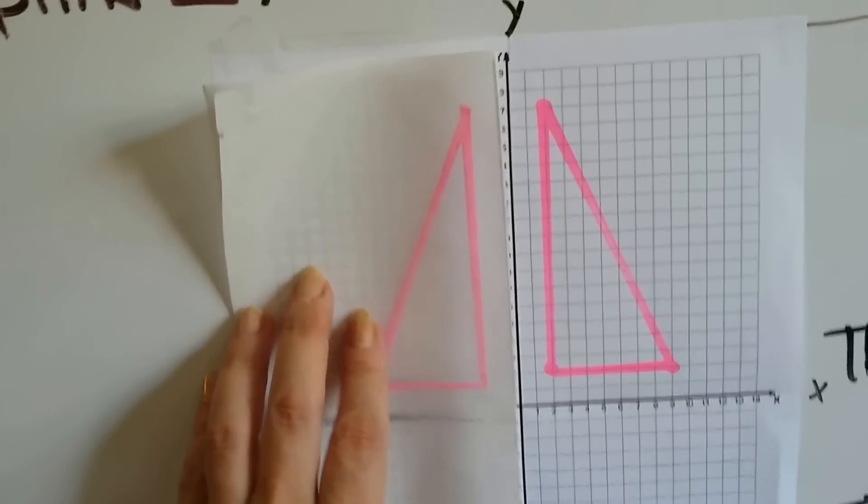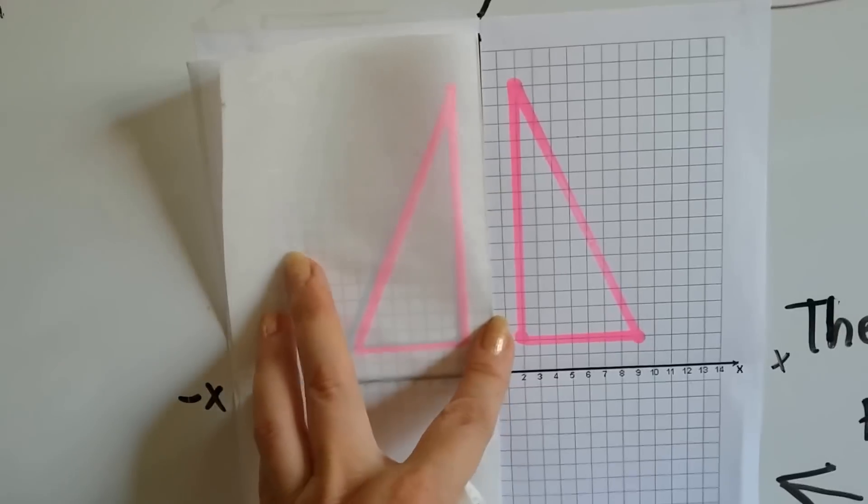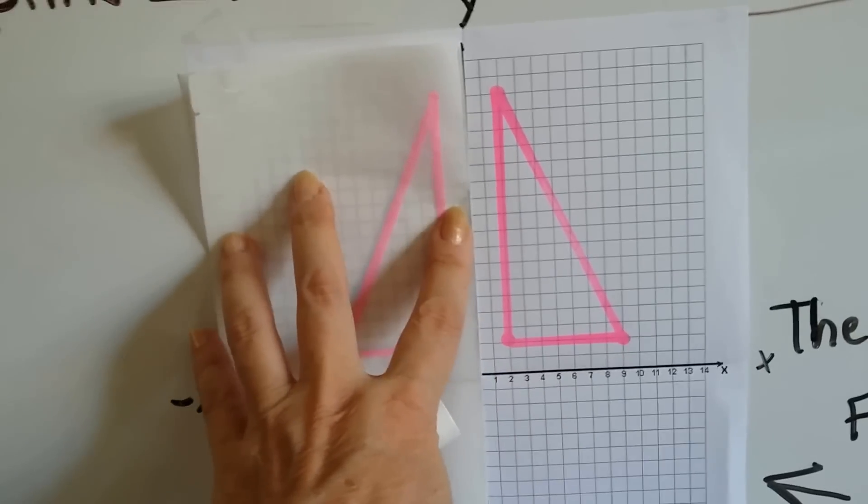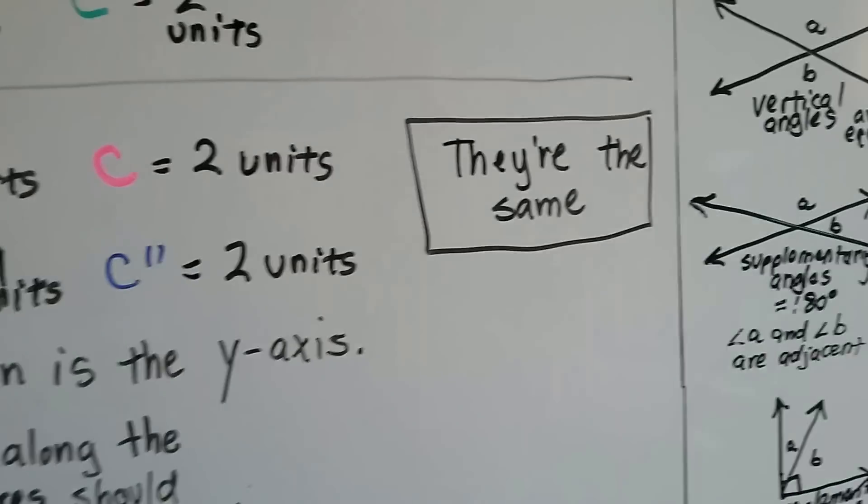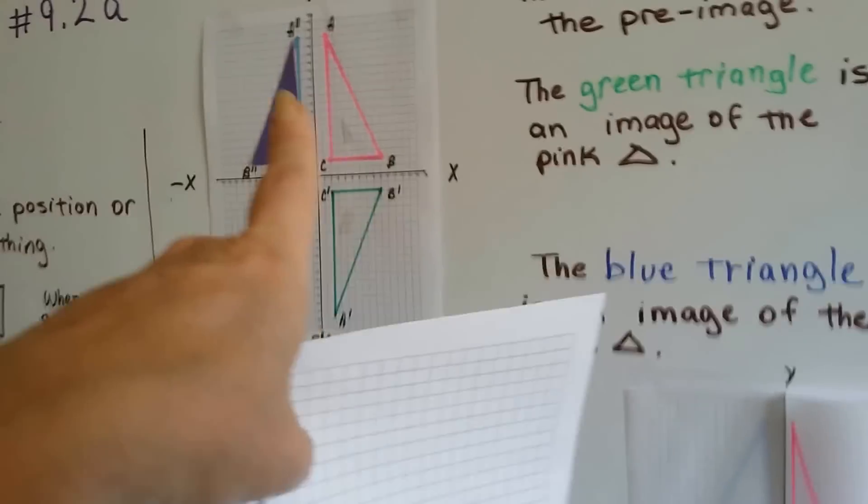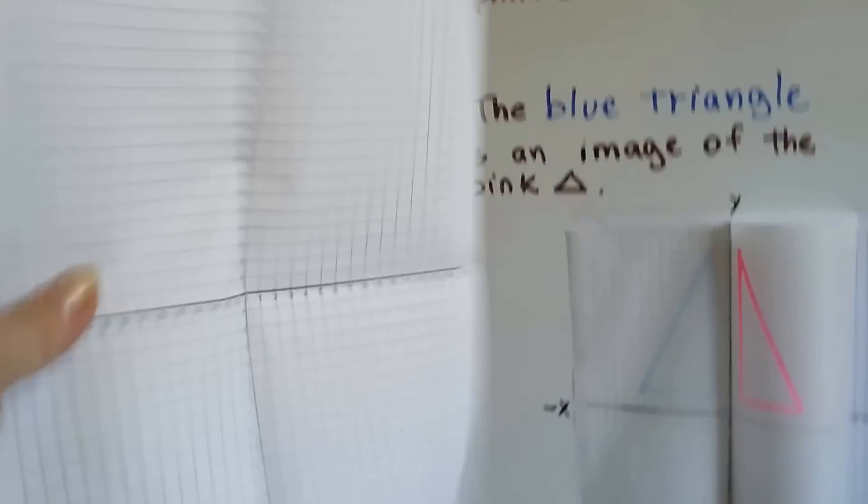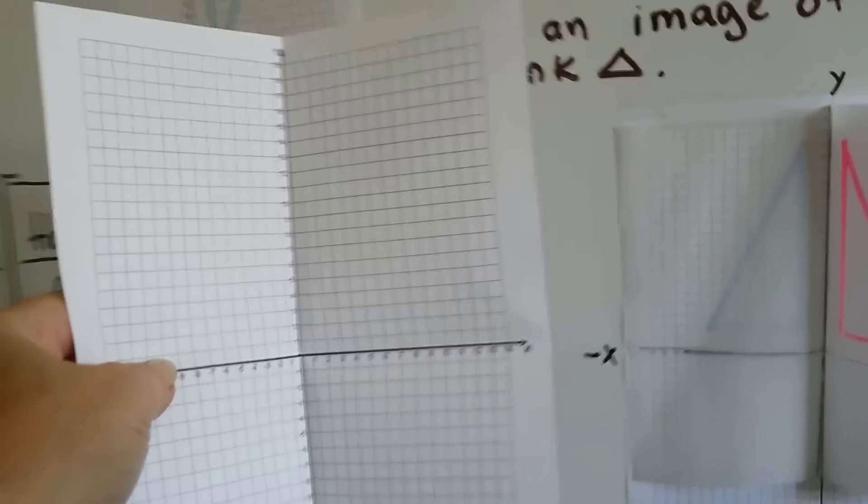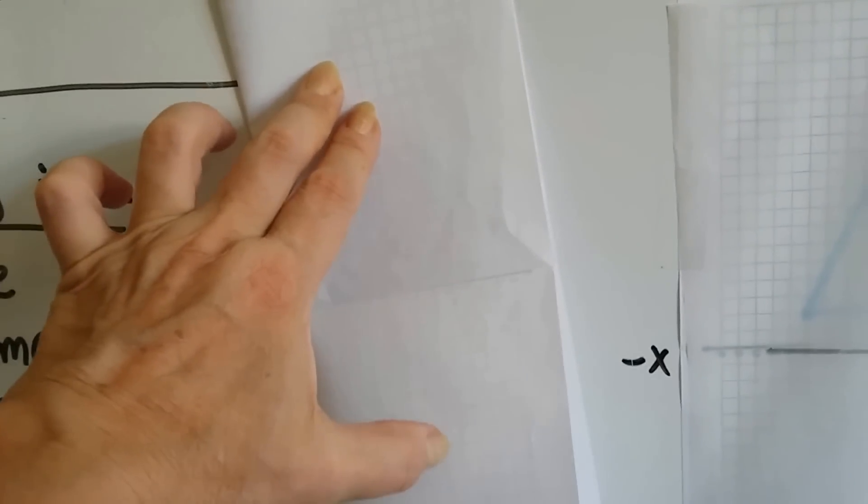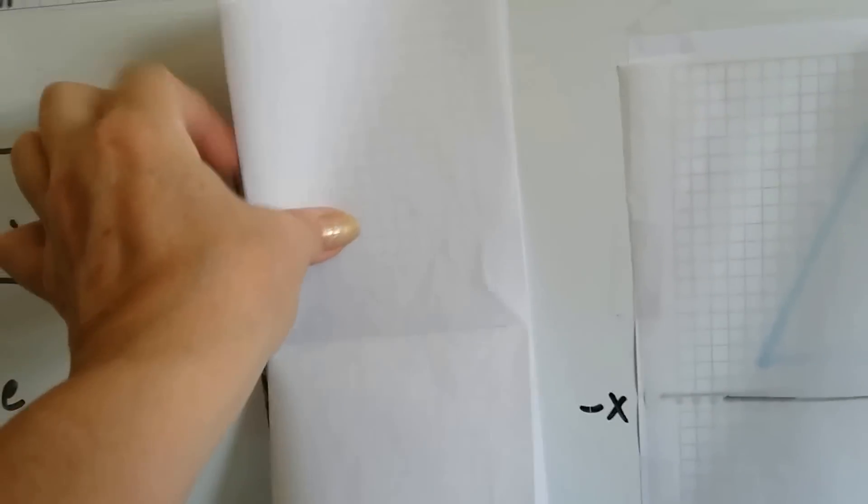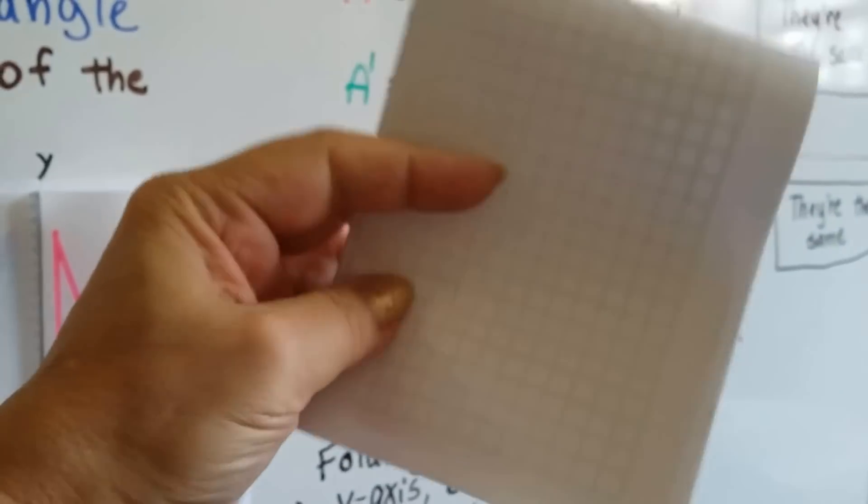But when I fold it on the y-axis, which is the line of reflection, it lands on it perfectly. If I were to get a piece of graph paper and I had triangles drawn in every quadrant, I would be able to take the graph paper, fold it in half, and line up the triangles on this quadrant, on these two quadrants, and on these two quadrants. And if I folded it again, I'd be able to hold it up to the light and all four triangles would line up on the quadrants.